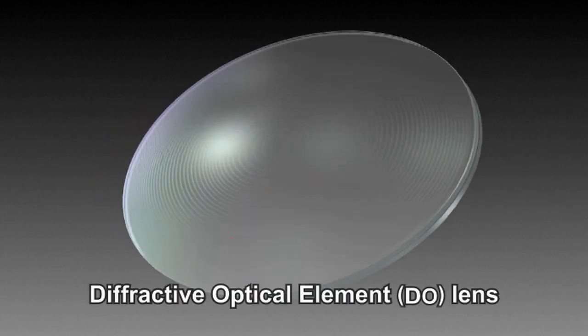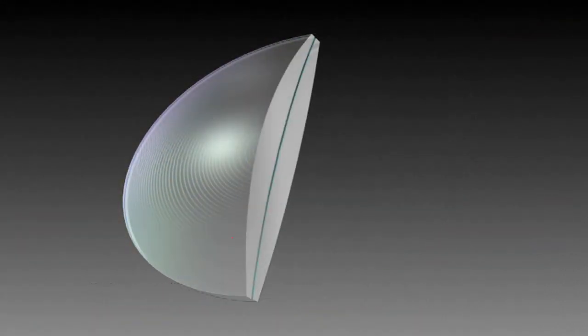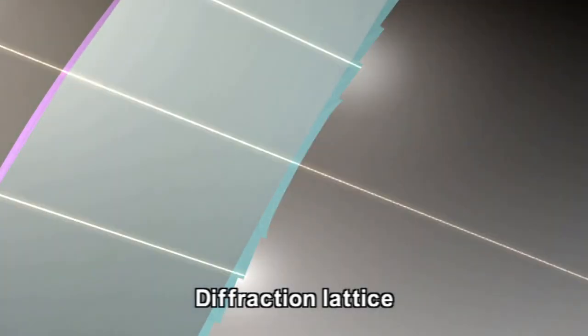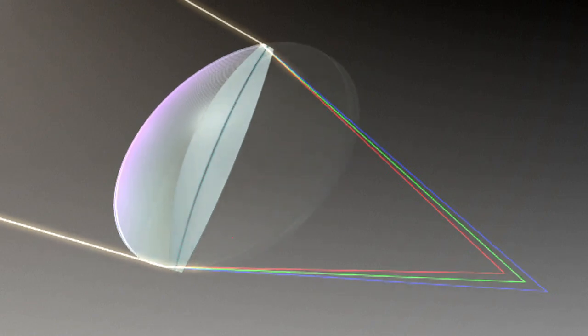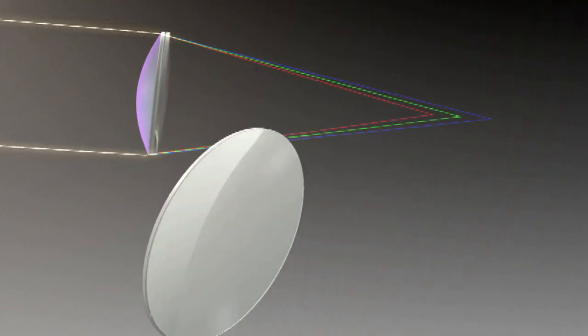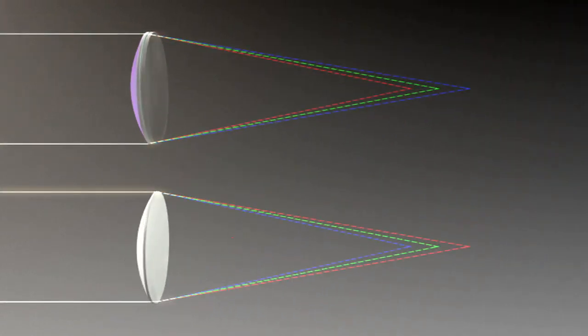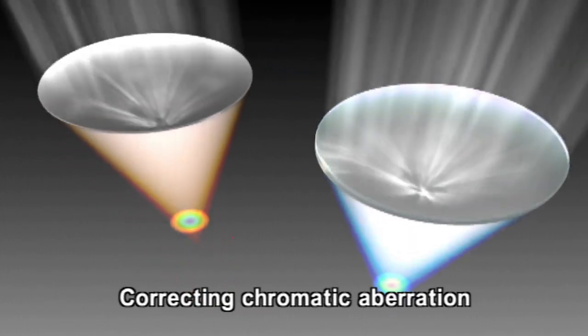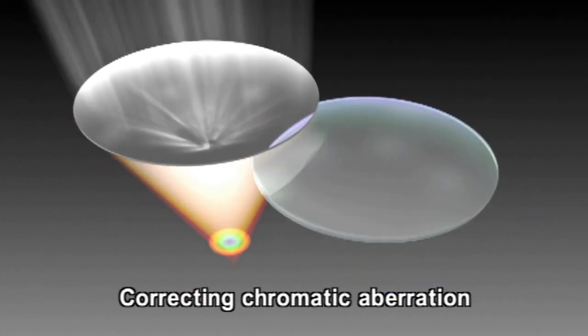In addition, Canon has also developed a revolutionary DO lens using diffractive optical elements. By creating a diffraction lattice, which was once considered impossible, Canon developed a DO lens that generates chromatic aberration in perfect contrast to convex lenses. Chromatic aberration can thus be corrected by pairing a DO lens with a conventional lens.